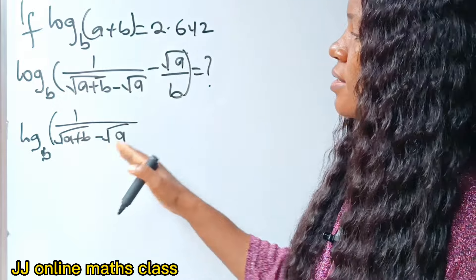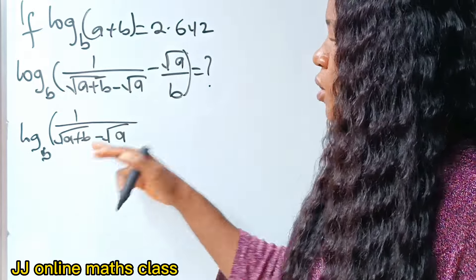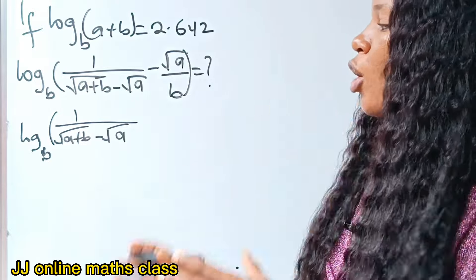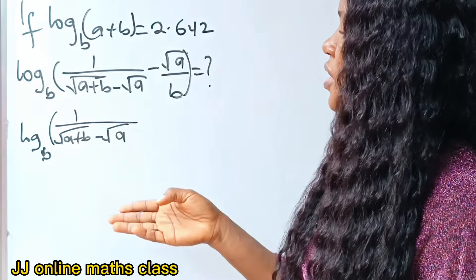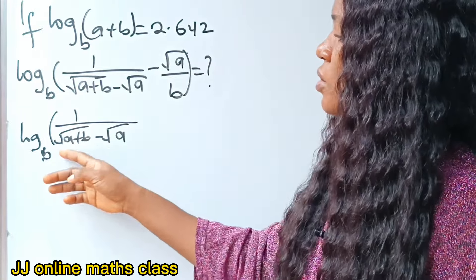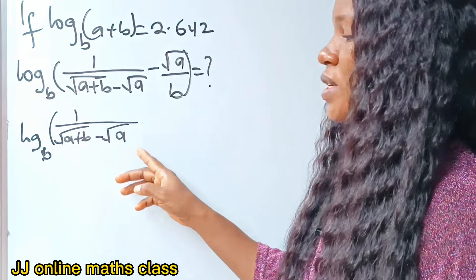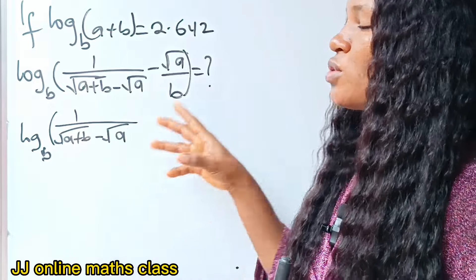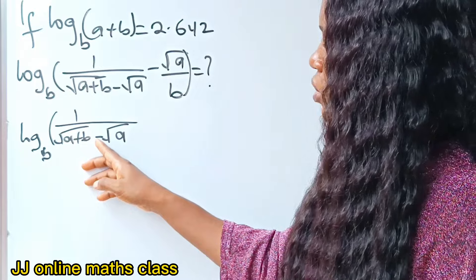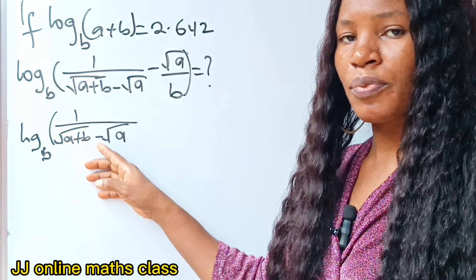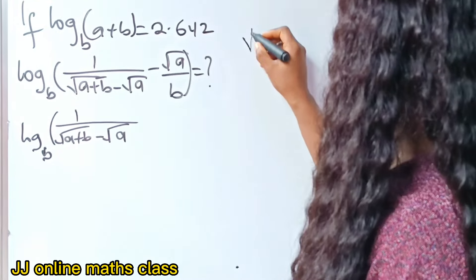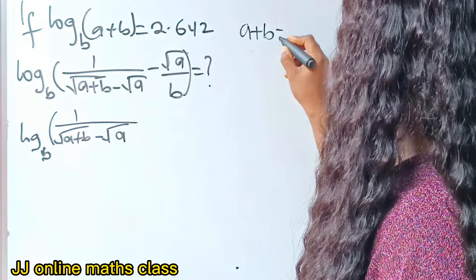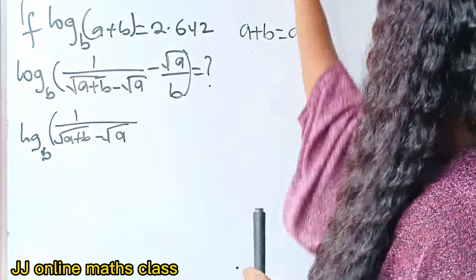If we rationalize this denominator, in rationalization you need to use the conjugate of what you have to rationalize. So what we have as our denominator is root (A plus B) minus root A. The conjugate is the same thing except that your minus becomes plus. For example, the conjugate of A plus B is A minus B.